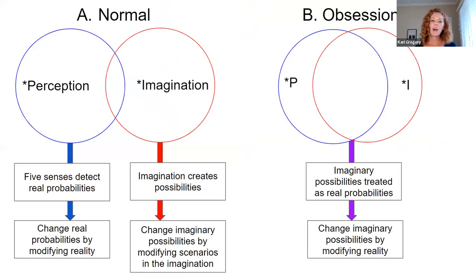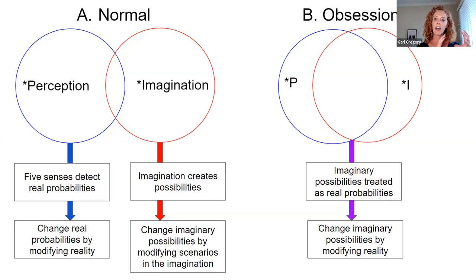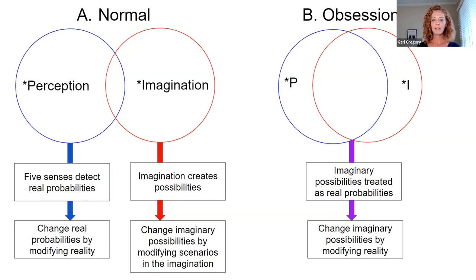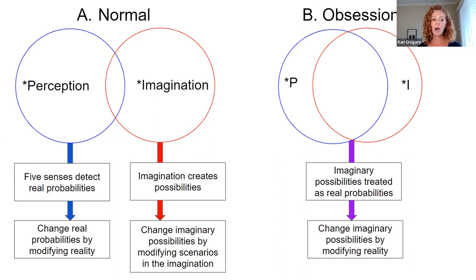I pulled this graphic off the website — Fred had posted it. It shows clients that we've got our perception and our imagination. In normal thinking, we have a little overlap between those two because humans are creative. But when we're in our perception, we have our five senses and they are detecting real probabilities, and we can change those real probabilities by modifying our reality.